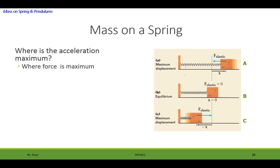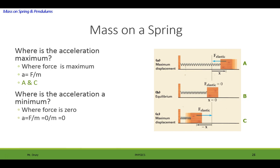Where's the acceleration maximum? Well, that would occur where the force is maximum. Because acceleration is equal to force divided by mass. So wherever that force is greatest, the acceleration will be greatest. And once again, that occurs at A and C. Where's the acceleration minimum? Where the force is zero. And where is the force zero? Back at the equilibrium position. So that occurs at point B.